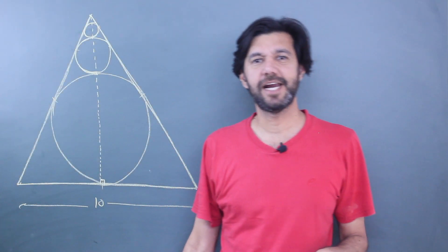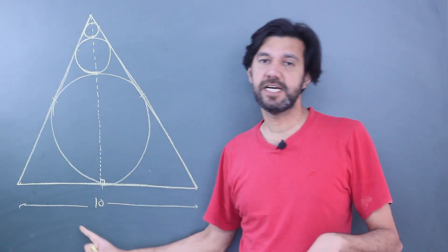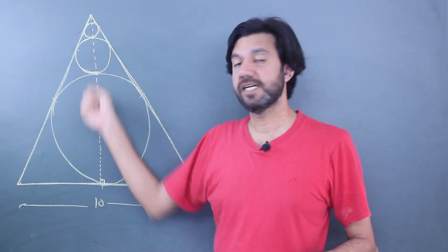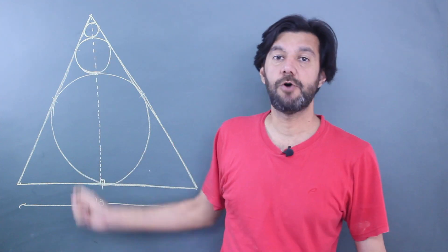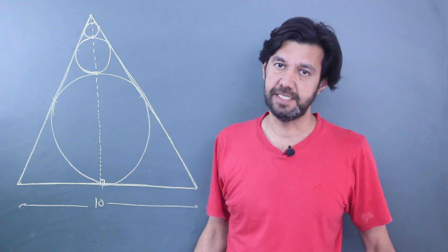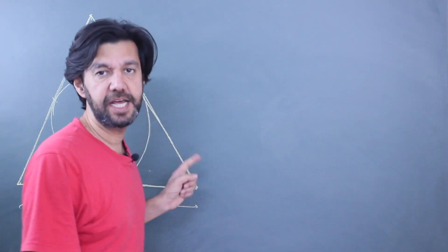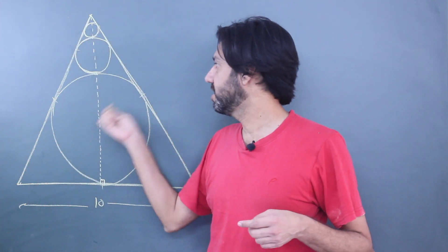In an equilateral triangle of side 10, three circles are drawn as seen in the image. What is the radius of the three circles? If you get into details and start constructing your lines...